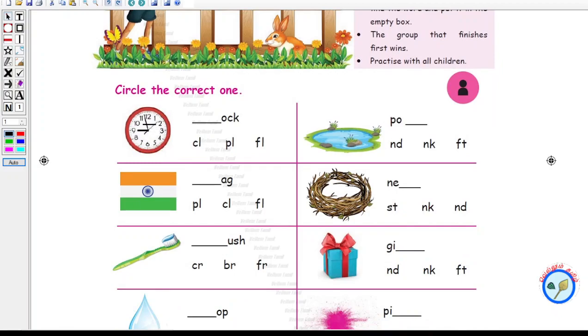What is this? This is a clock. You know the spelling of the clock. What is the spelling for clock? C-L-O-C-K. So let me circle the C-L.